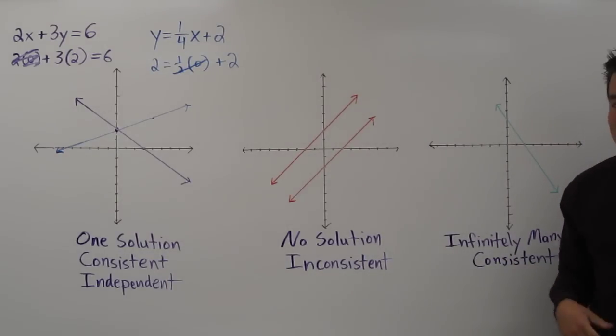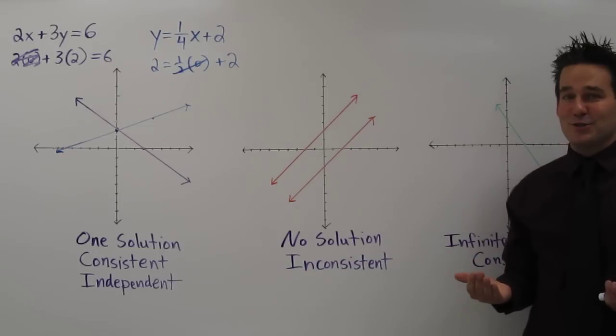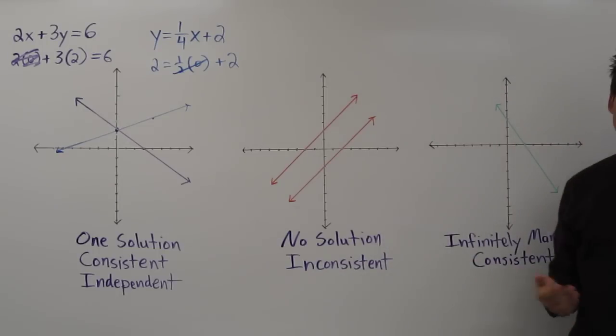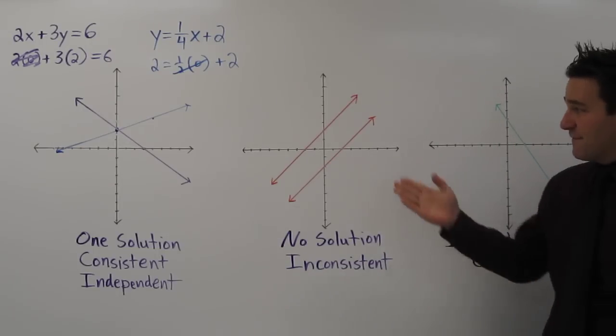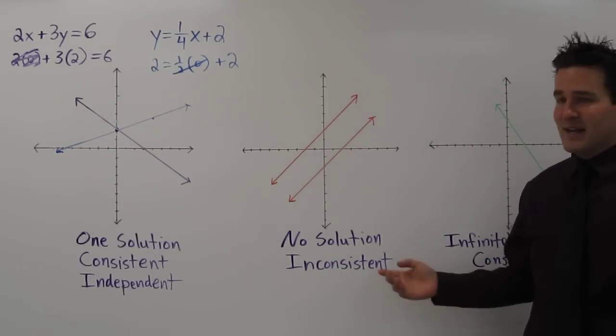Basically, if the system of equations has a solution or infinitely many solutions, it's consistent. If there's no solution, then it's inconsistent.